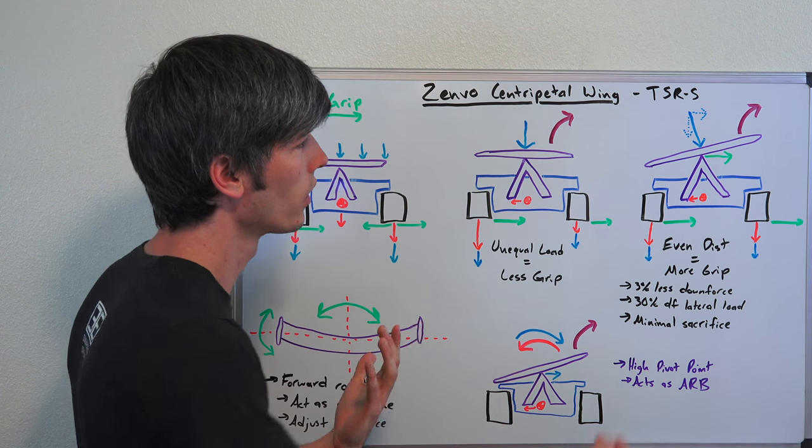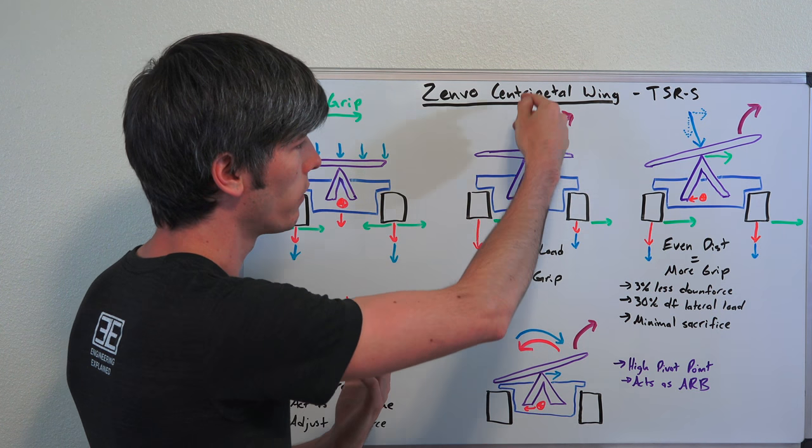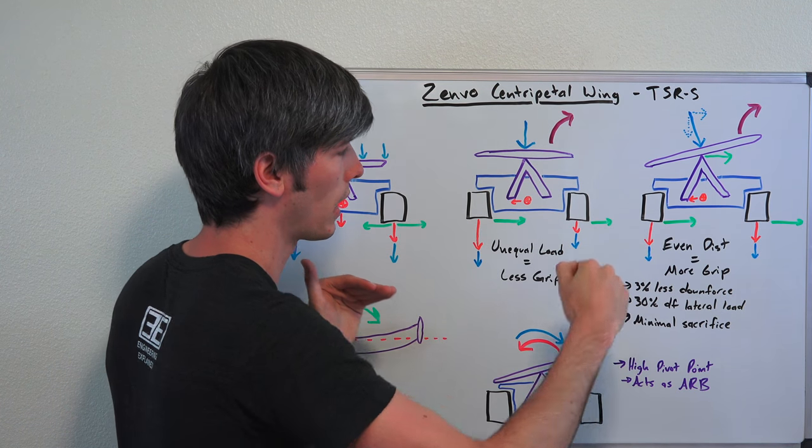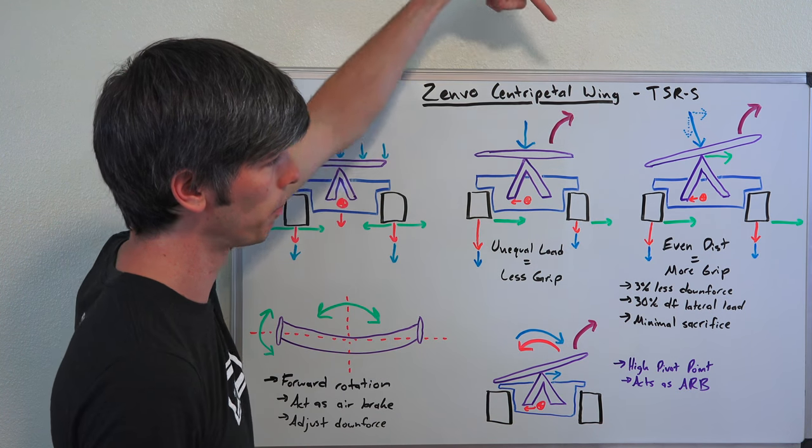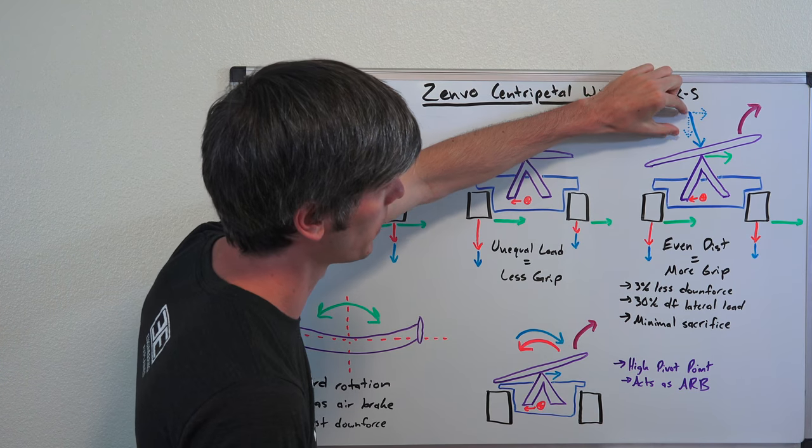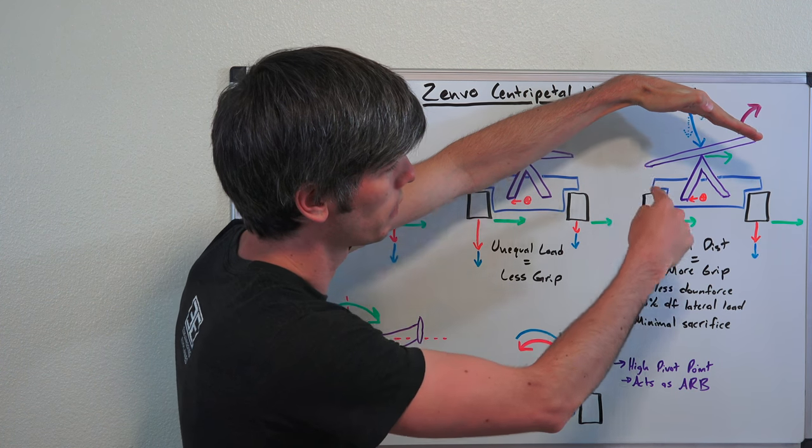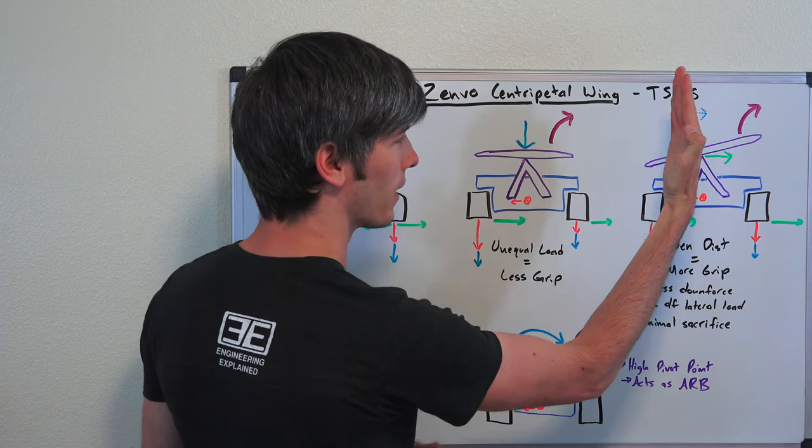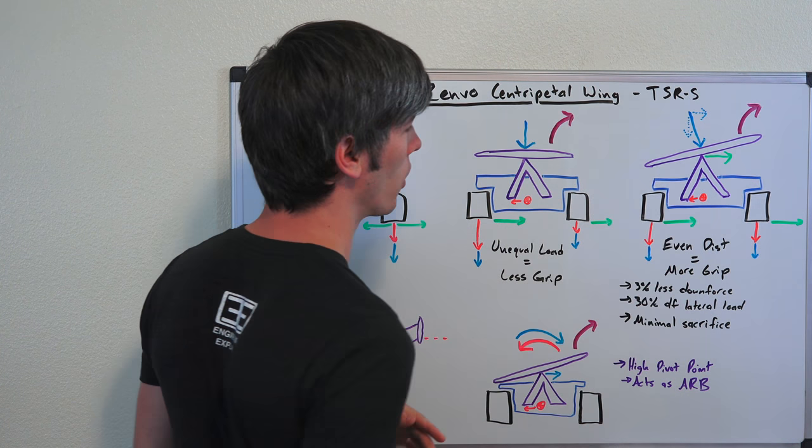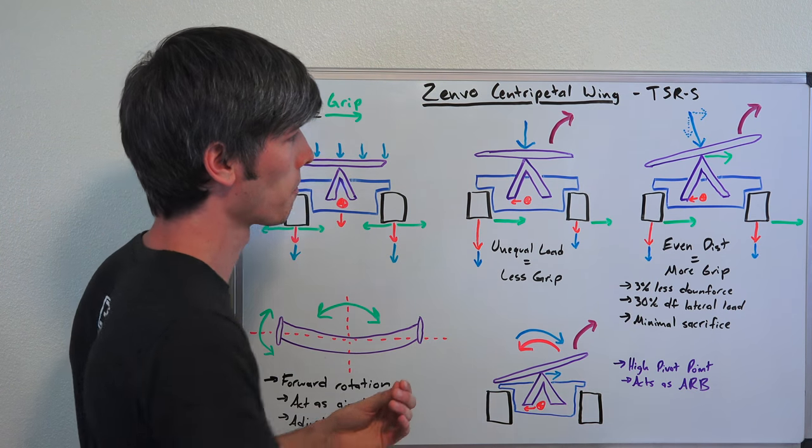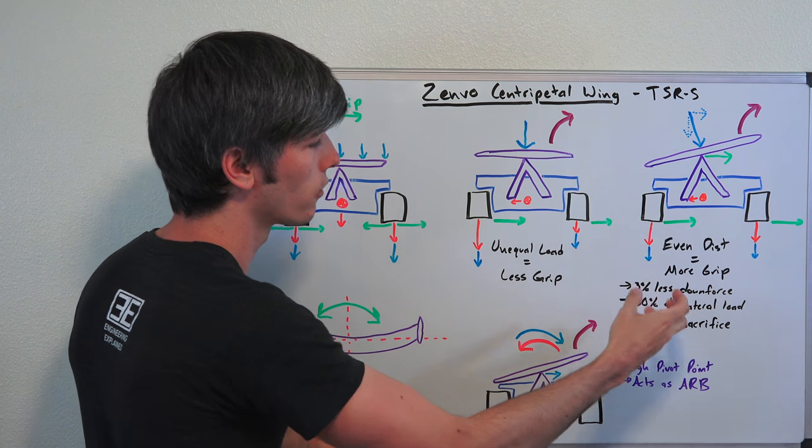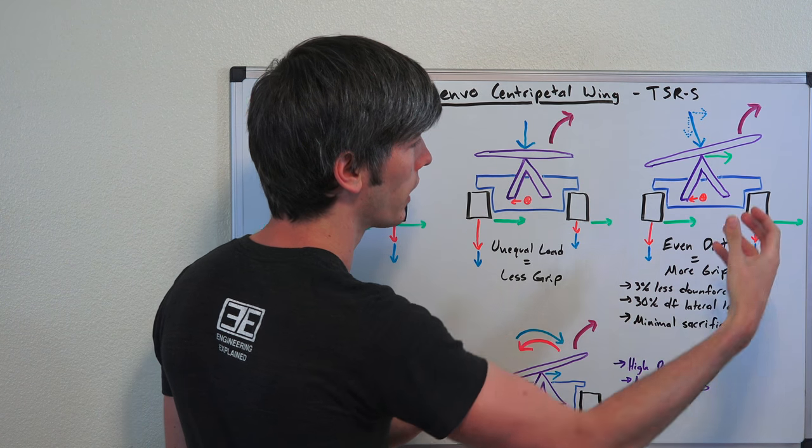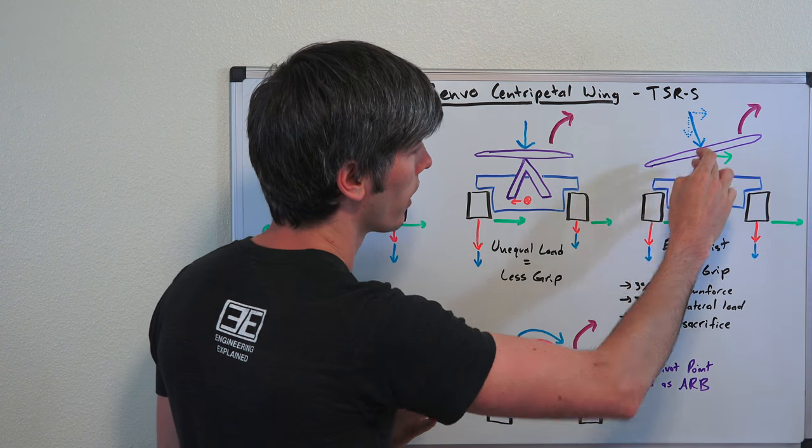And so, what's cool about this, of course there's going to be a sacrifice, right? If you want maximum downforce, you're going to want the wing to be perfectly flat with the ground, because your downforce is going to be the downward element of that. So if it's pointed towards the side, the downward element is smaller. And once you get flat, if you were to have a wing like this, then of course it would just push your car sideways, it wouldn't give you any downforce. But the reduction in downforce is very small relative to the amount of lateral load that it has, and part of this is having this nice high pivot point.